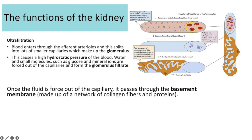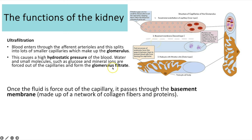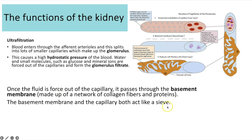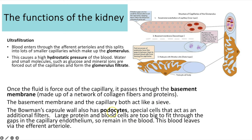The capillary wall gaps are called fenestrations. Lining the capillary is the basement membrane — another filtration layer — and surrounding those are podocytes, which create a further layer the liquid must pass through. So there are three filter layers: the fenestrations in the capillary wall, then the basement membrane which acts like a sieve, then the gaps between the podocytes. The filtrate then flows through to the proximal convoluted tubule.